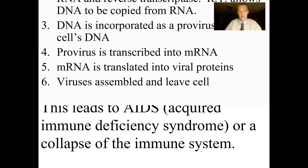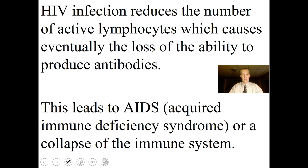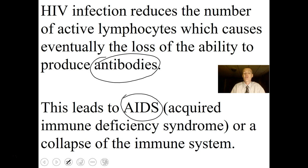HIV reduces the number of active lymphocytes, eventually causing loss of the ability to produce antibodies — the disease-fighting chemicals that destroy invaders. This loss of the immune system leads to AIDS — Acquired Immune Deficiency Syndrome — a total collapse of the immune system. People with HIV don't die from the virus directly; they die from other infections because the immune system has been destroyed.